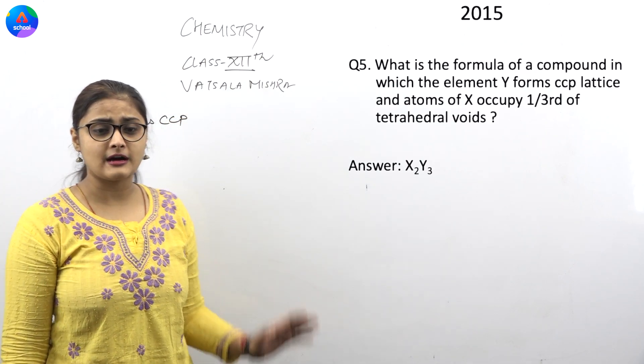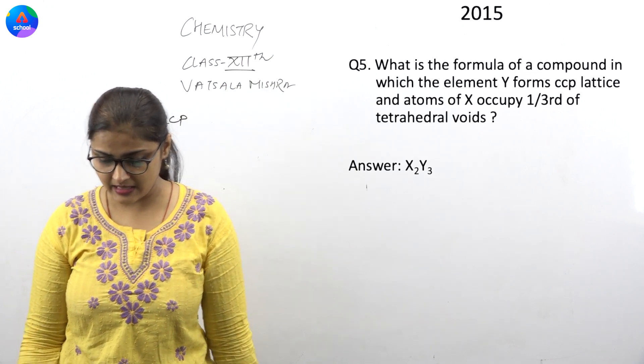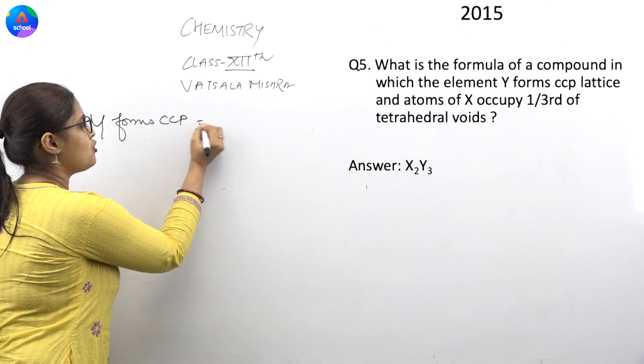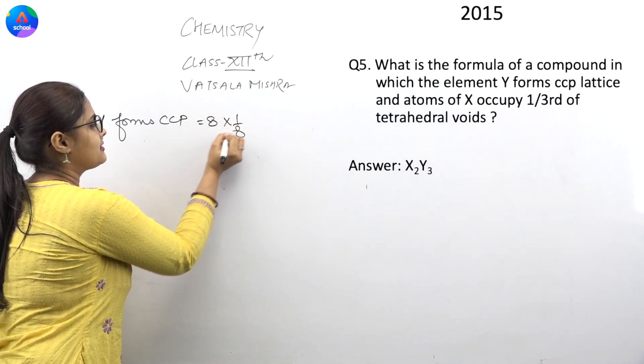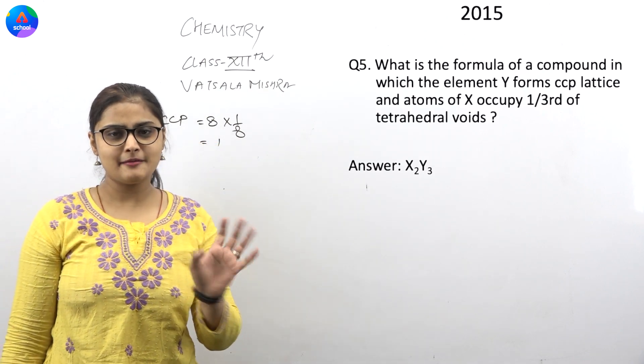And if Y forms CCP, then how many numbers should be in the lattice? So, 8 into 1 by 8. That's right. In Y, there is 1.